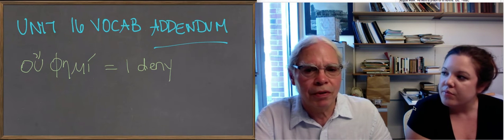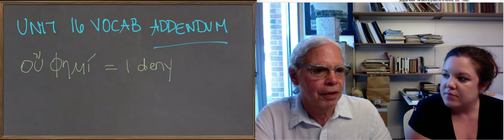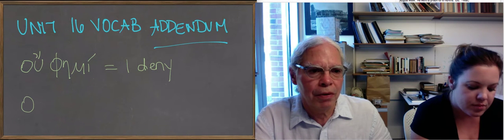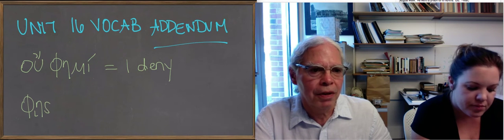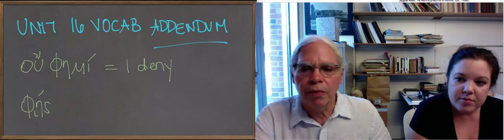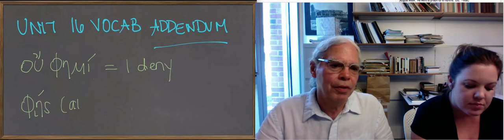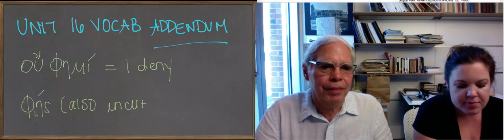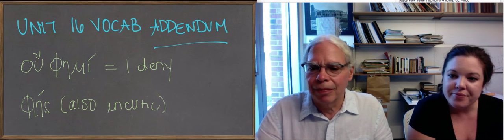The other thing is that I think in the discussion of φημί earlier, I said that the second-person singular forms are not enclitic, but that was a mistake. The form φῄς, with the iota subscript and an acute accent, is enclitic like all the forms of the present. So also enclitic. Okay, thanks.